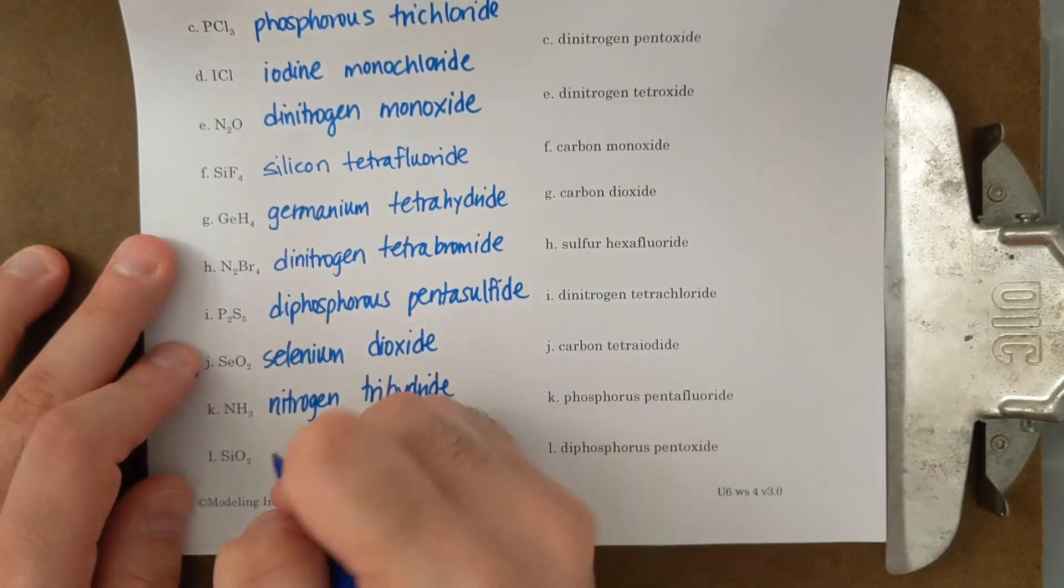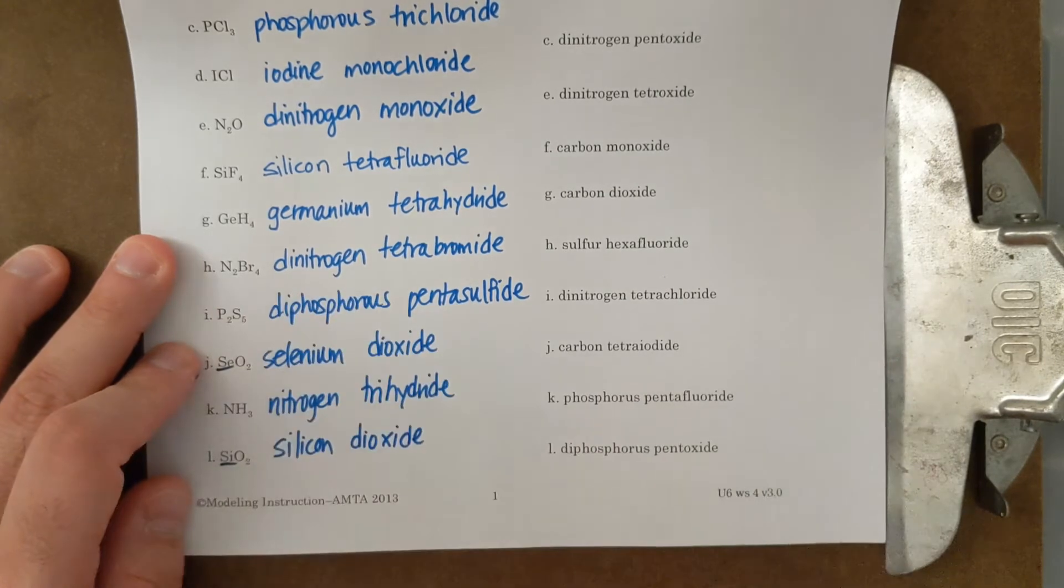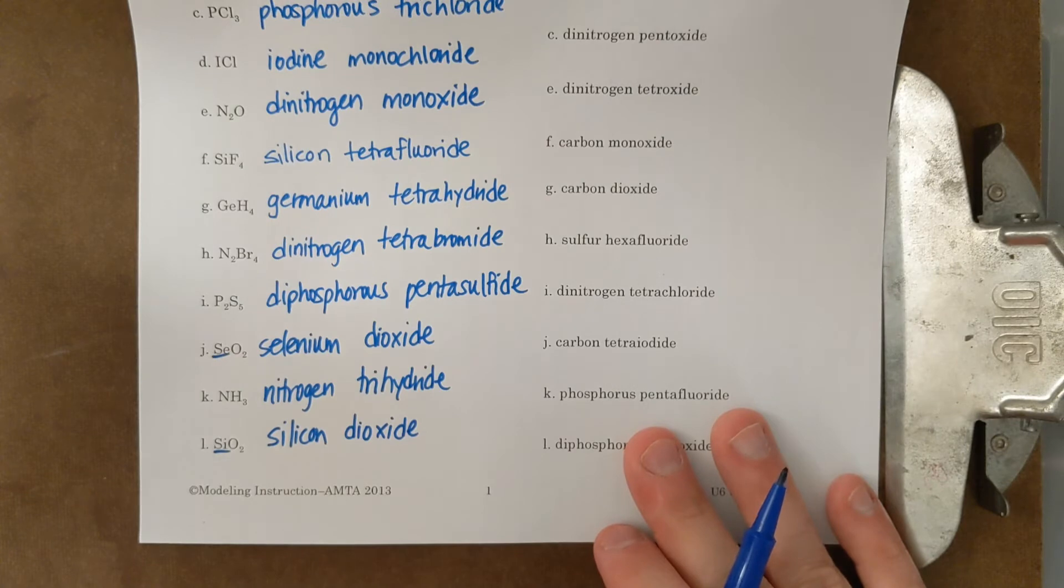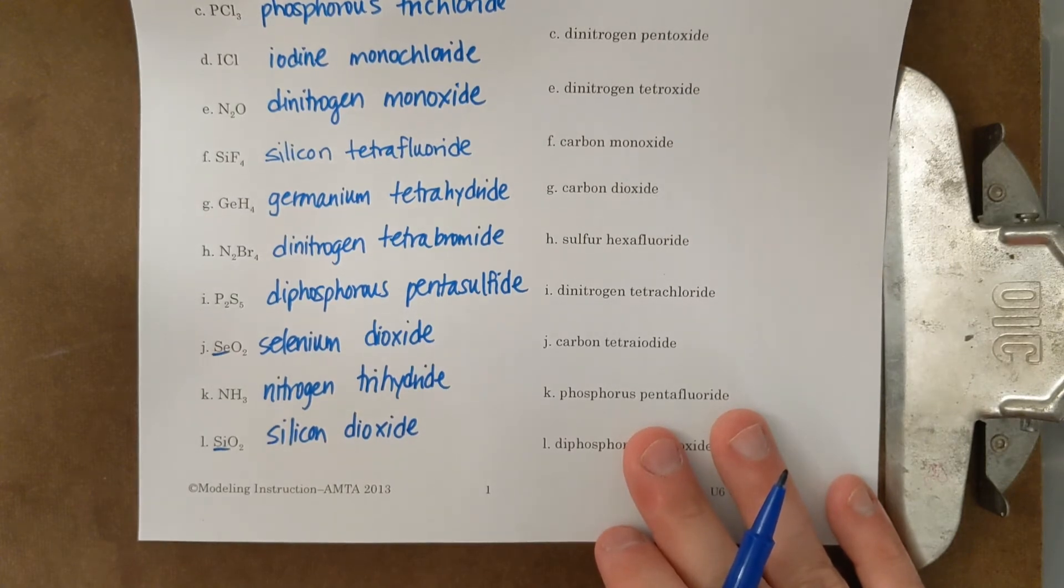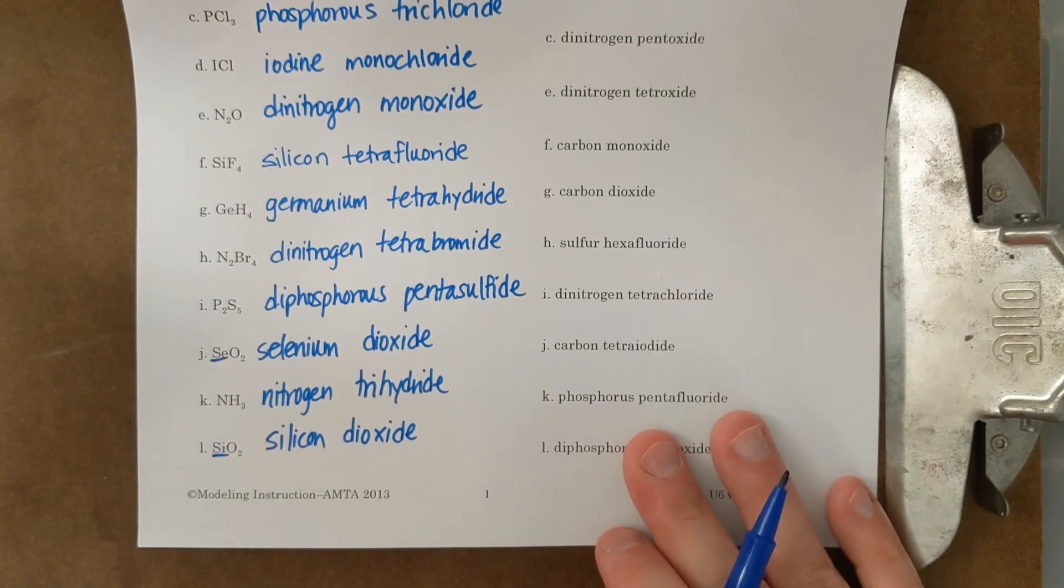And then finally, SiO2, silicon dioxide. Okay. All right. And selenium and silicon show up kind of in group four, and it looks like they might be metalloids, but we use them with our molecular nomenclature.